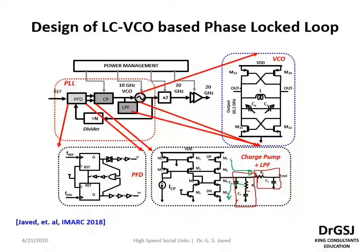The control voltage output is fed to the control input of the tuning capacitor of the LC tank. The inductance L is fixed, and the LC tank is tuned to operate at 10.2 gigahertz. A wide tuning range of approximately 15% to 18% is provided in the LC tank to compensate for temperature and voltage variations.